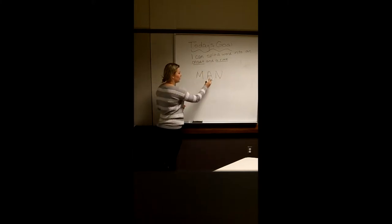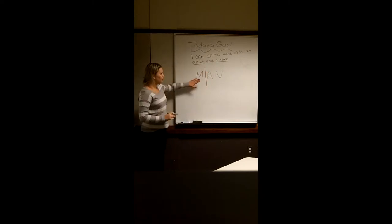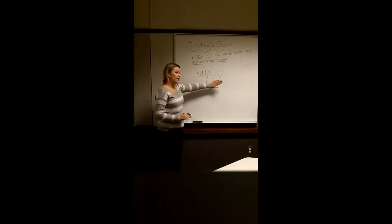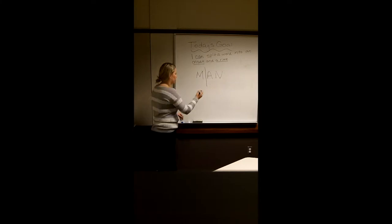So we go and we find the vowel, right? So we said the A was our vowel in the word, and we're going to split it up. So now we have an M portion and an A-N portion. The M portion is called the onset.